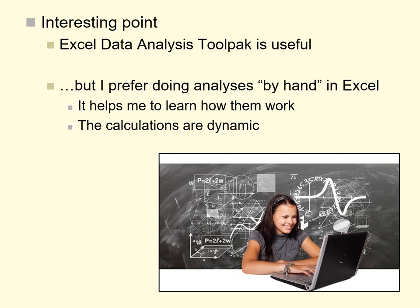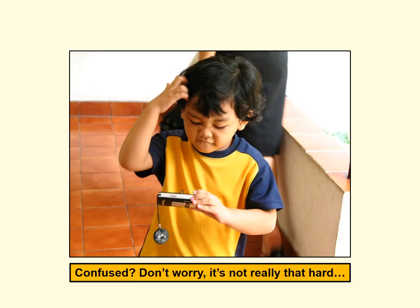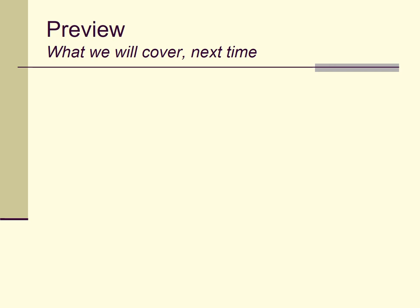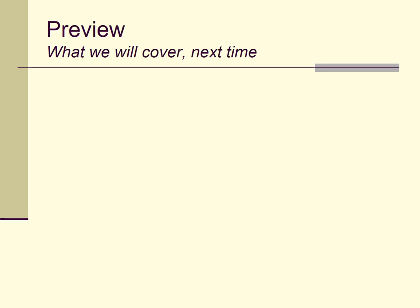Don't worry if you're feeling overwhelmed — ANOVA from a regression perspective using dummy codes isn't as hard as it may seem. Once you work with it a little bit, you'll get the hang of it. Here's a quick preview for the next class: we'll talk about interpreting those regression coefficients in more detail, showing how you can plug in different values for dummy coded variables.